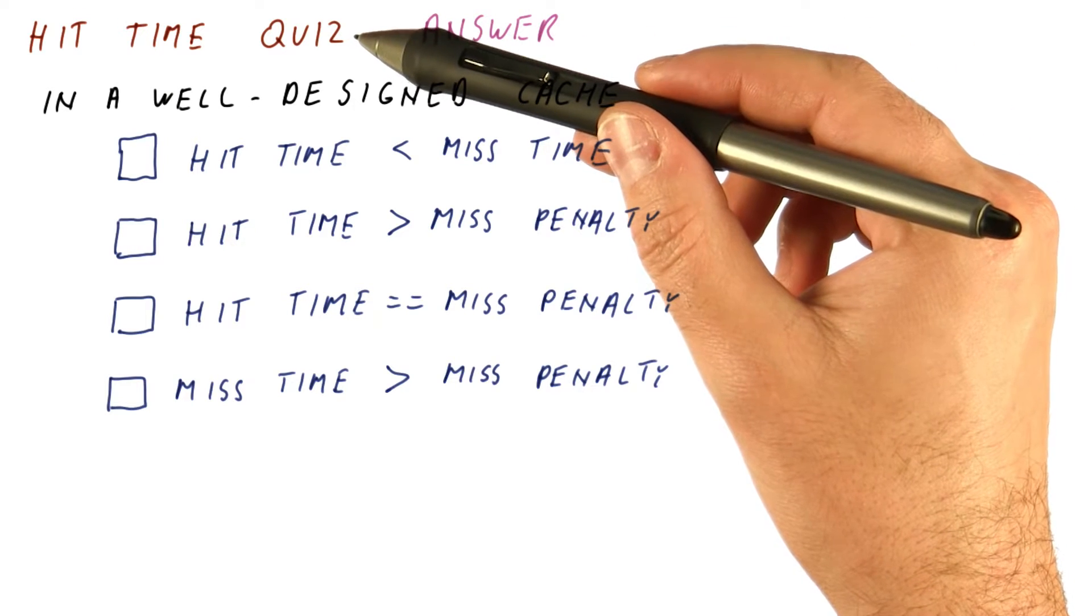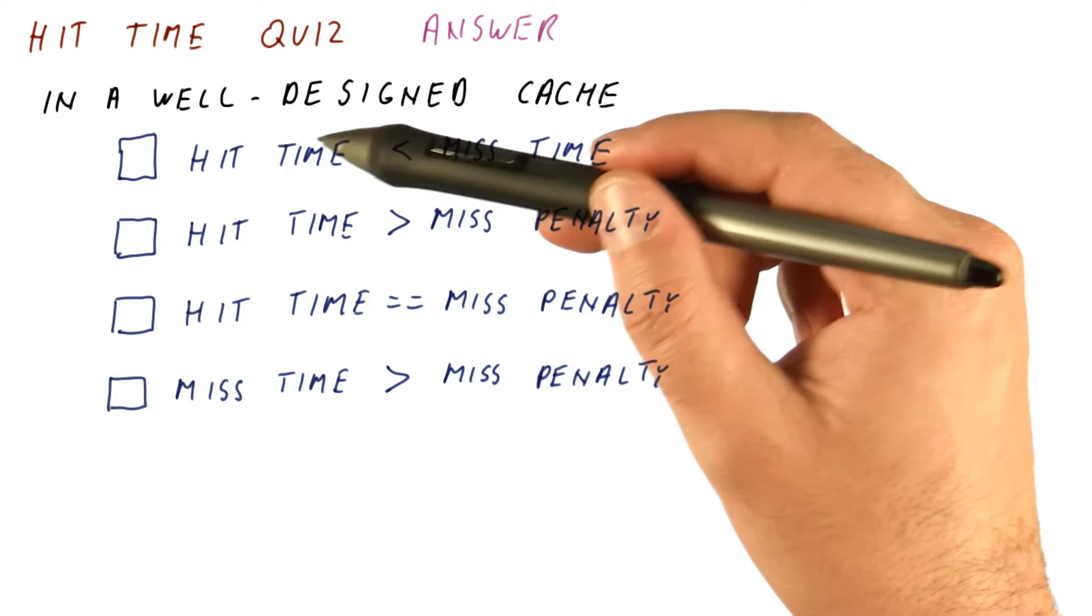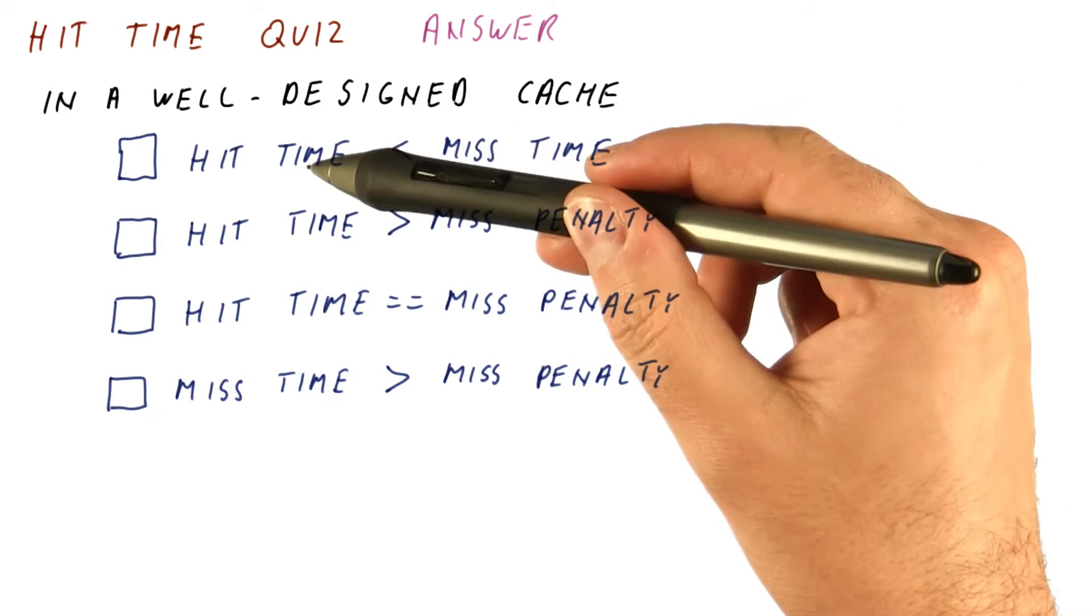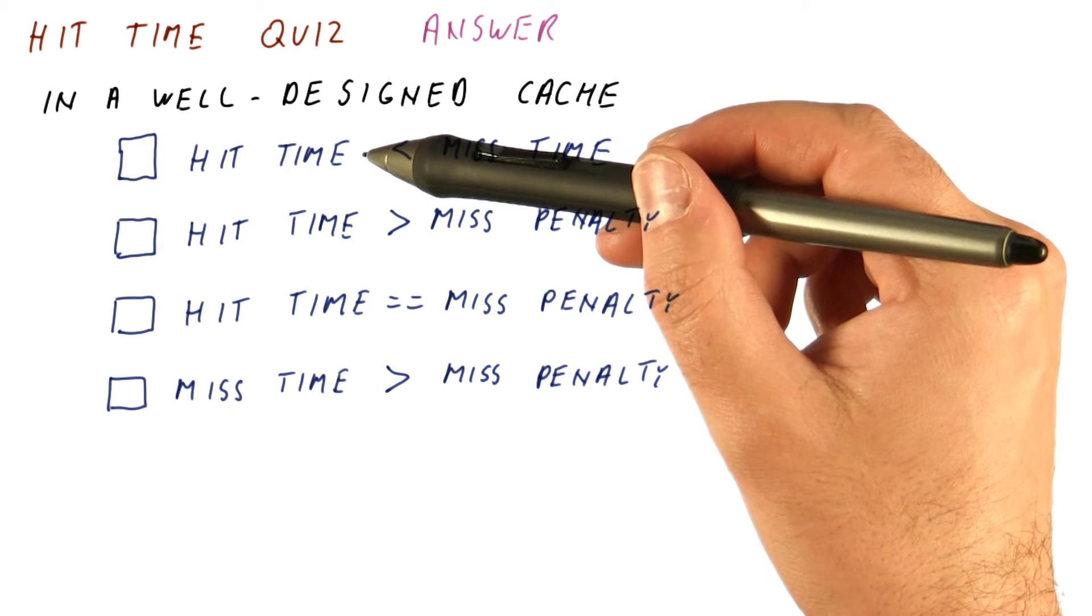Let's look at the answer for our hit time quiz. In a well-designed cache, hit time is significantly lower than miss time. Miss time includes the hit time and the miss penalty. Typically, we want the hit time to be very small.